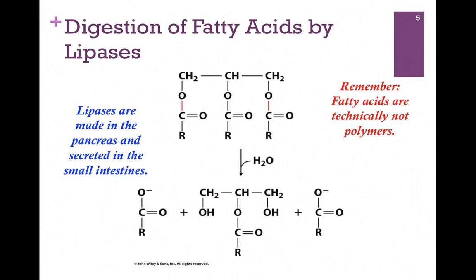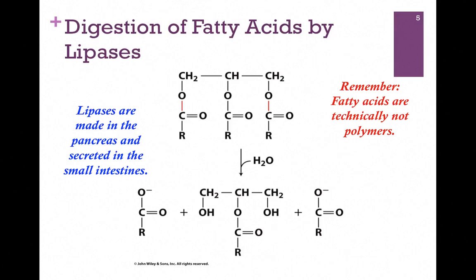Fatty acids are digested by lipases. They clip off those three fatty acid chains, and then in catabolic pathways, we'll break them down further. Remember, fatty acids are not true polymers, but they do aggregate and they are part of our diet. Lipases are made in the pancreas, and they're secreted in the small intestines.